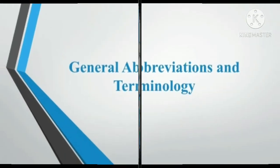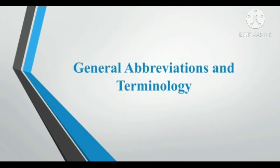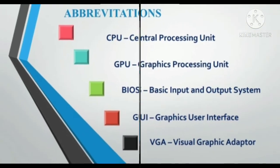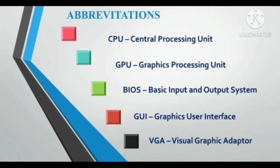We'll start with general abbreviations and terminologies. Those who've studied computer science, these topics will be very familiar, but for others it will not be. CPU: Central Processing Unit. GPU: Graphics Processing Unit.